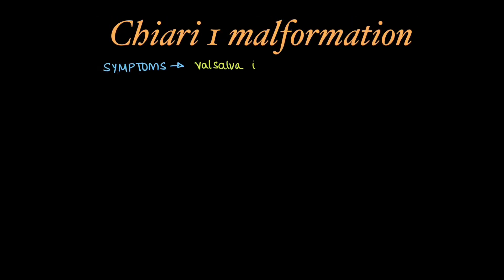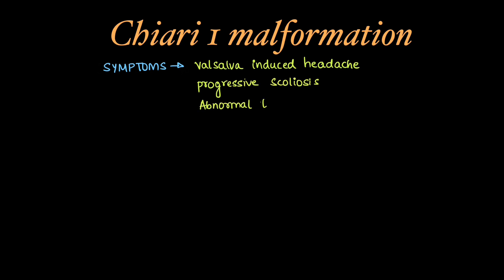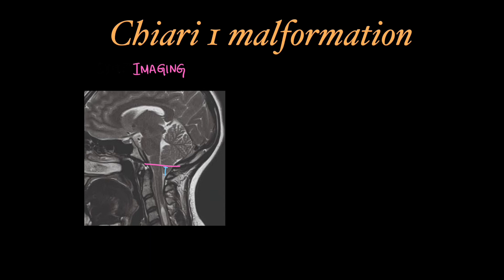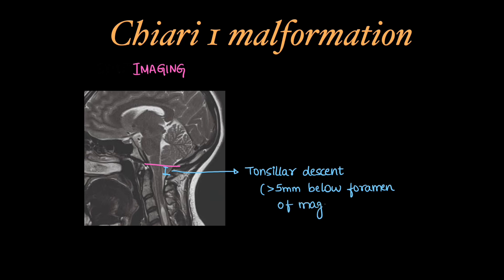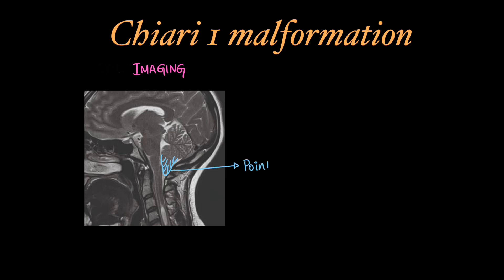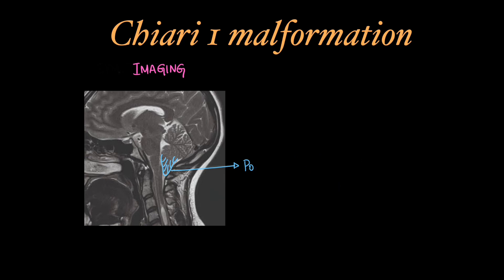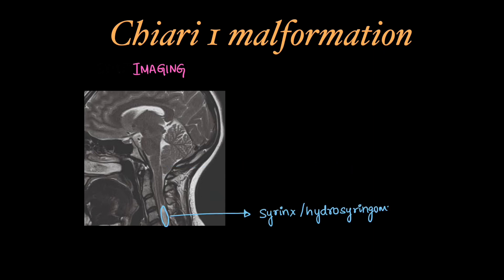Moving on to Chiari 1 malformation, patients can present with symptoms like Valsalva-induced headache, progressive scoliosis, and abnormal temperature and vibratory sense. The last two symptoms are because of syrinx formation in the spinal cord. On imaging, we can see tonsillar descent below the McRae's line or the foramen magnum line — more than 5 mm below the foramen of magnum is considered significant. The shape of the tonsils becomes pointed or peg-like with angled folia. There will be effaced CSF spaces and spinal cord syrinx or hydrosyringomyelia.